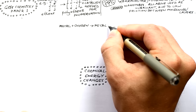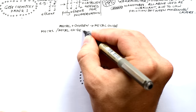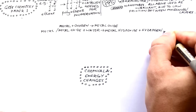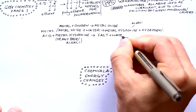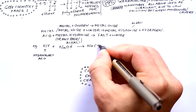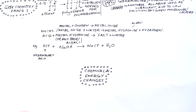Moving on to chemical changes. A metal reacting with oxygen makes a metal oxide — this is oxidation. A metal or metal oxide reacting with water makes a metal hydroxide plus hydrogen gas. An acid reacting with a metal hydroxide makes a salt and water — for example, hydrochloric acid and sodium hydroxide make sodium chloride (table salt) and water. This is a neutralization reaction.